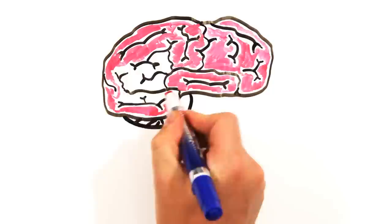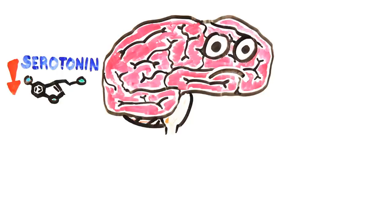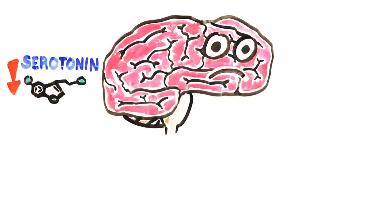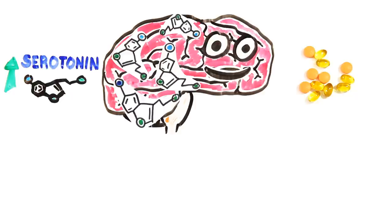In the past, depression was often described as simply a chemical imbalance in the brain. Specifically, scientists believe that a lack of the neurotransmitter serotonin was to blame, which is often referred to as the feel-good chemical. However, the only real evidence for this was that when some depressed people were prescribed drugs which increased serotonin levels, it helped alleviate their symptoms.